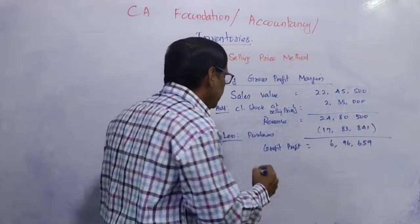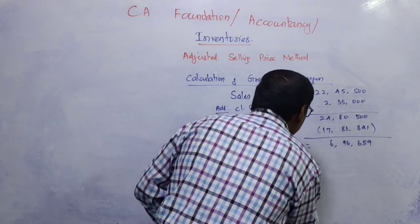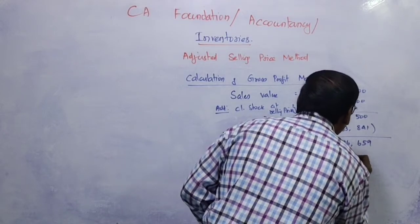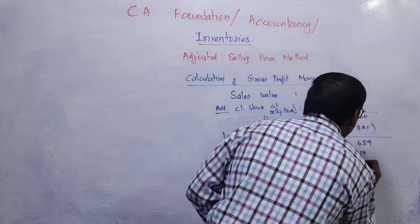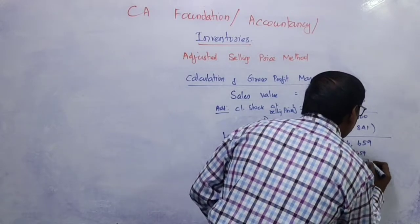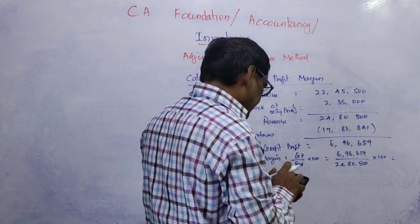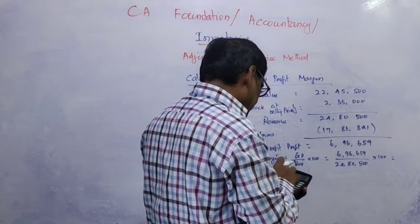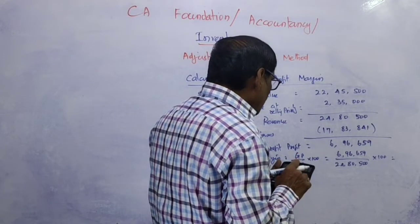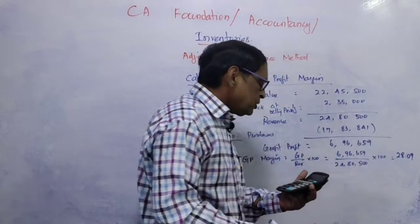The gross profit margin equals GP divided by revenue into 100. GP is Rs. 6,96,659 divided by Rs. 24,80,500 into 100, which equals 28.09%. This is the gross profit margin.